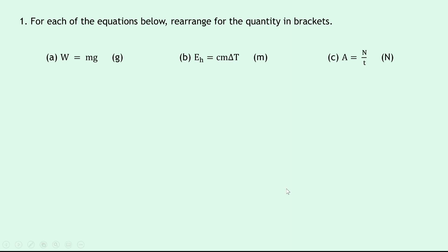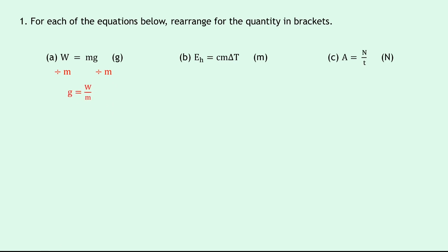We look at the right hand side of the equation — if we want g on its own then we need to get rid of the m. The way we get rid of the m is we divide both sides by m, because right now m and g are multiplied together, so we do the opposite of multiplication, which is division. Dividing both sides by m gives us W over m on the left hand side and g on the right, so rearranging we get g equals W over m.